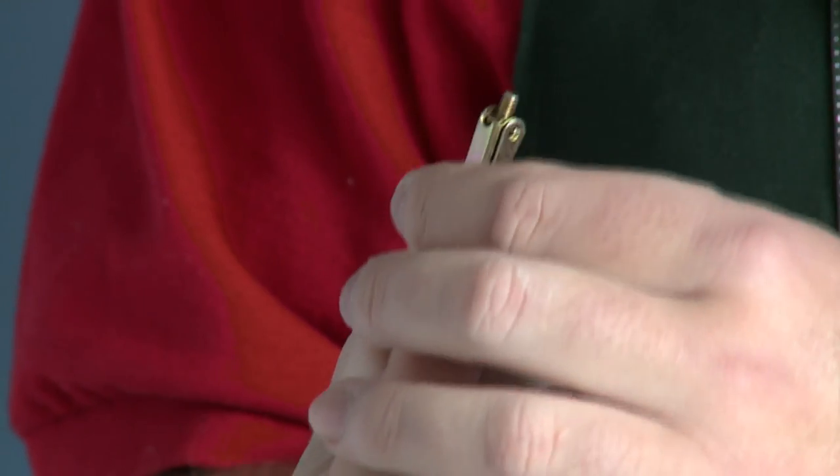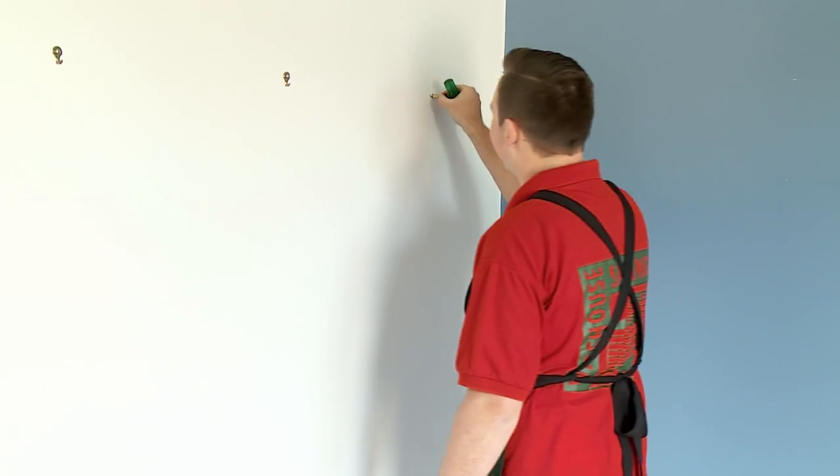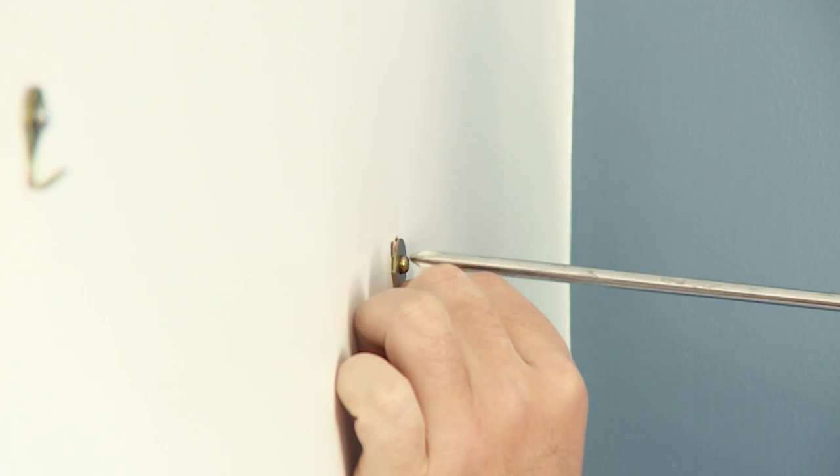So now we're going to hang our last wall hook. This one we need to pre-drill before we put our wall hook in. And then you put it in and screw and the toggle will come out.